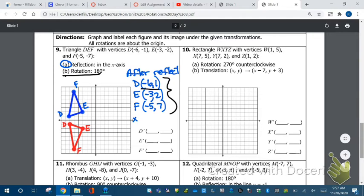So if D was (-6, 1), it's now going to be (6, -1). Change the signs of your E. It will now be (3, -2). And F will be (5, -7). Then graph this final shape, and that will be your answer.